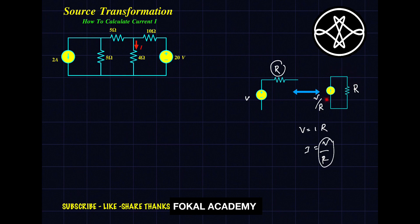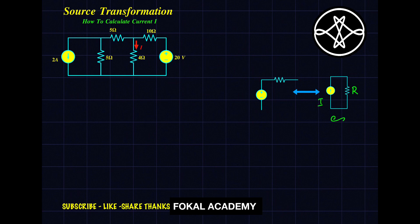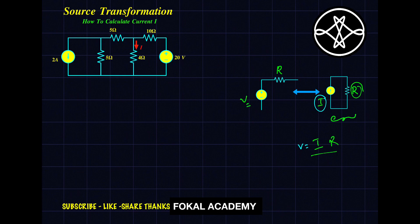Suppose a current source is there — how to convert it into a voltage source. Suppose we have current I in parallel with resistor R. It is then replaced with a voltage source in series with the same resistor R. According to Ohm's law, V = IR. So the voltage equals I into R.